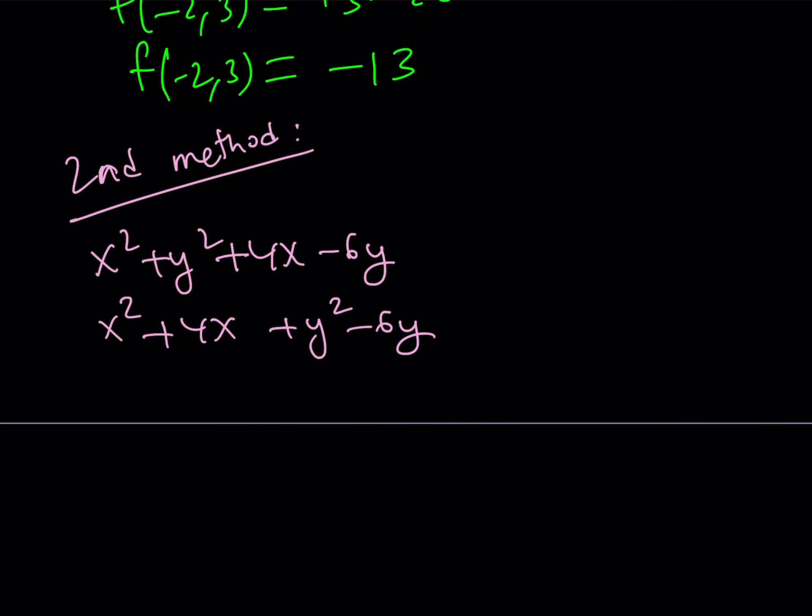Now how do you find what number to add? Well, you look at the coefficient of x, half of 4 is 2, 2 squared is 4. So we're supposed to add 4 for the 4x and for the negative 6y I'm supposed to add 9. But of course you can't just add anything to an expression because it's not equal to something. So I added 13. I need to now subtract 13 to balance it out.